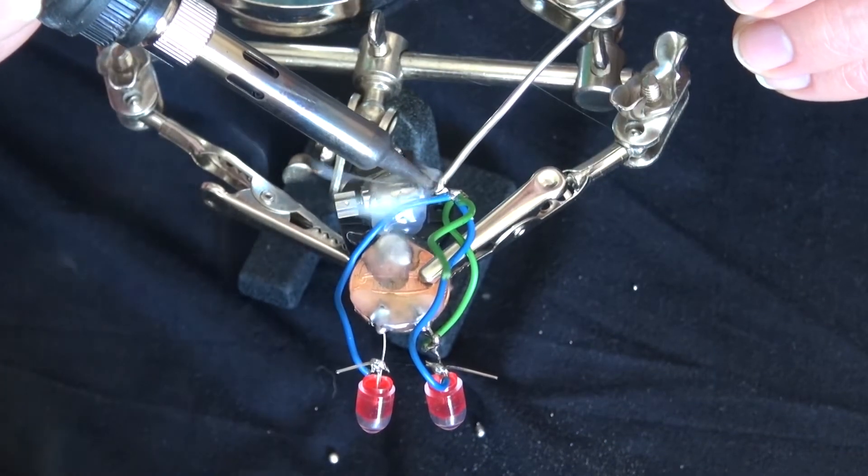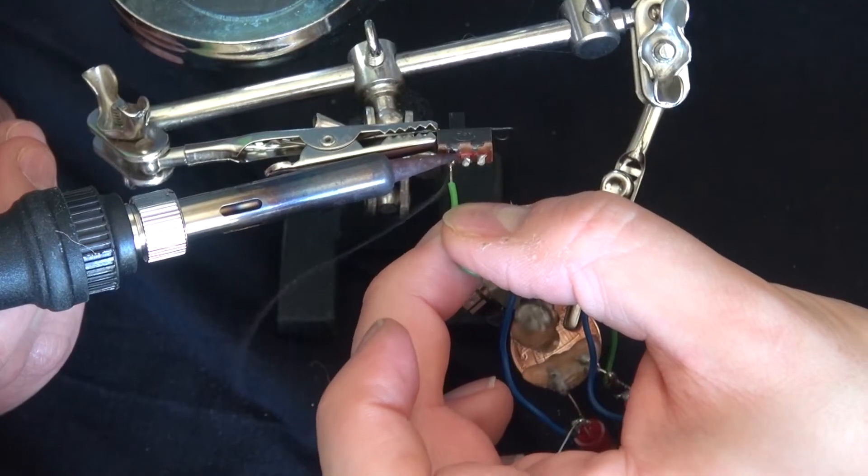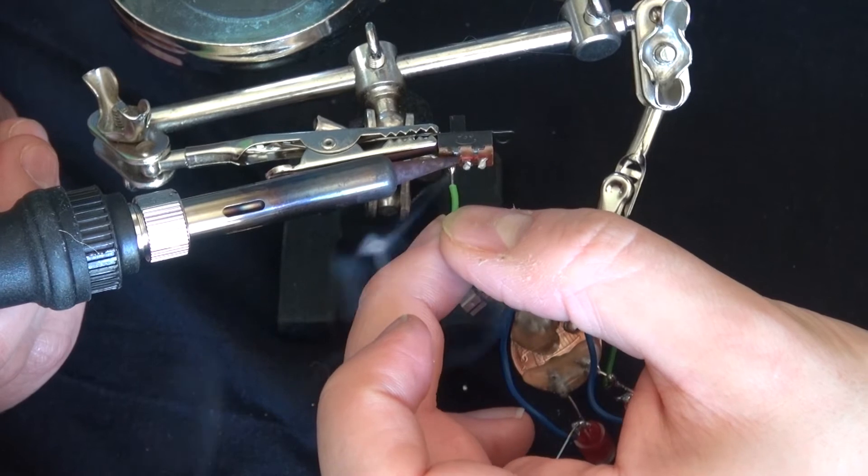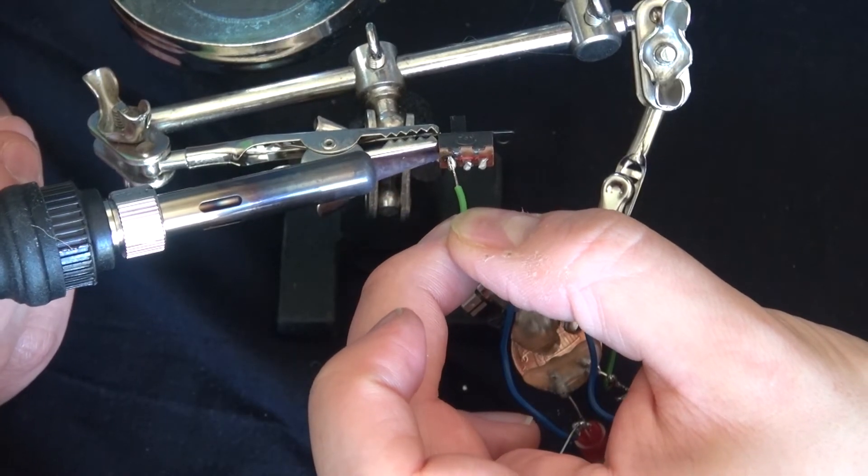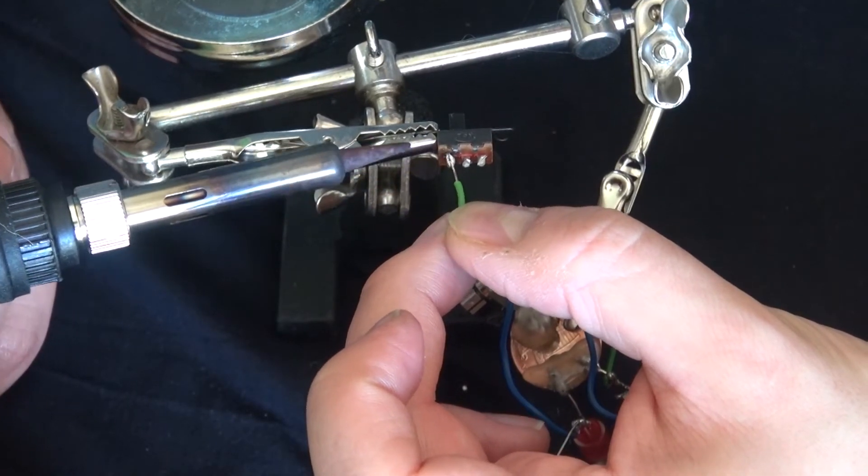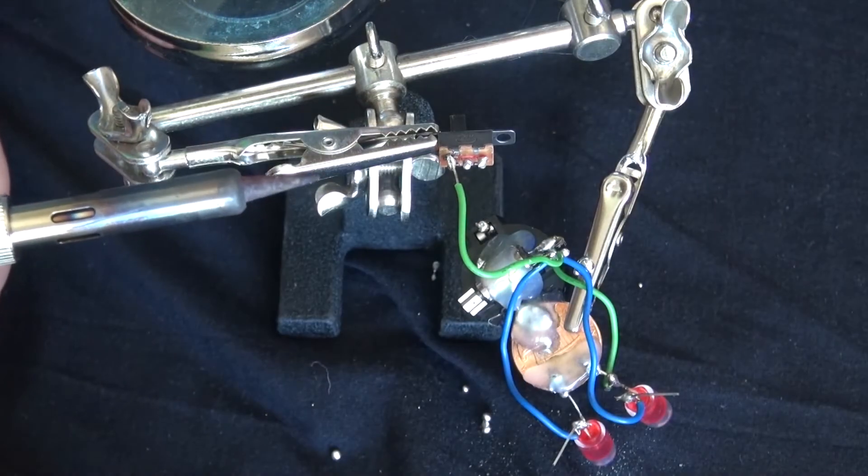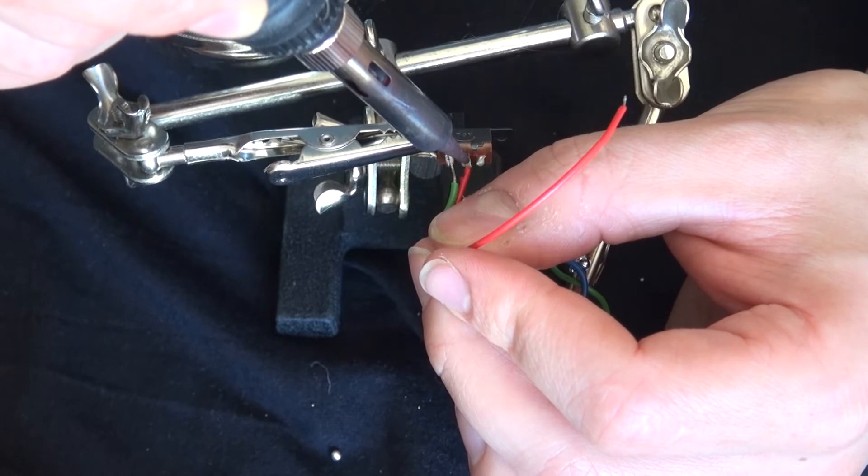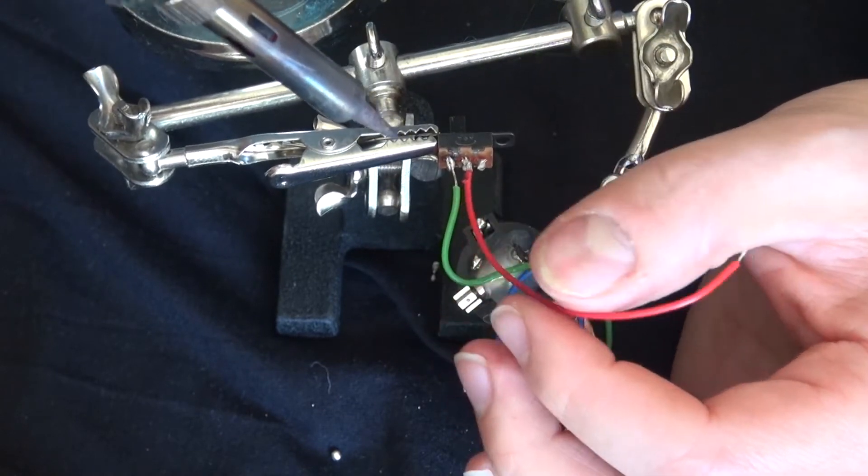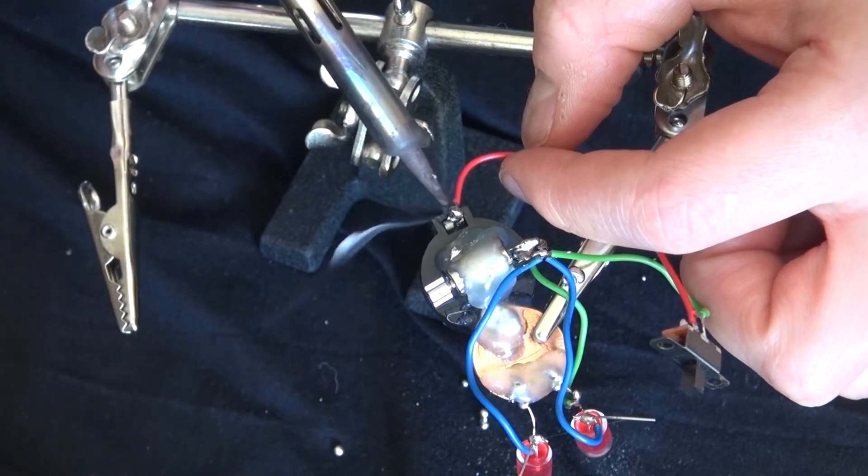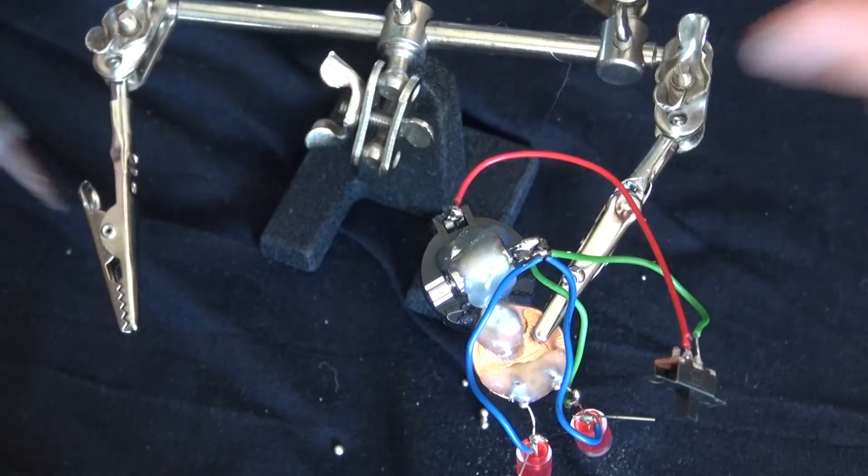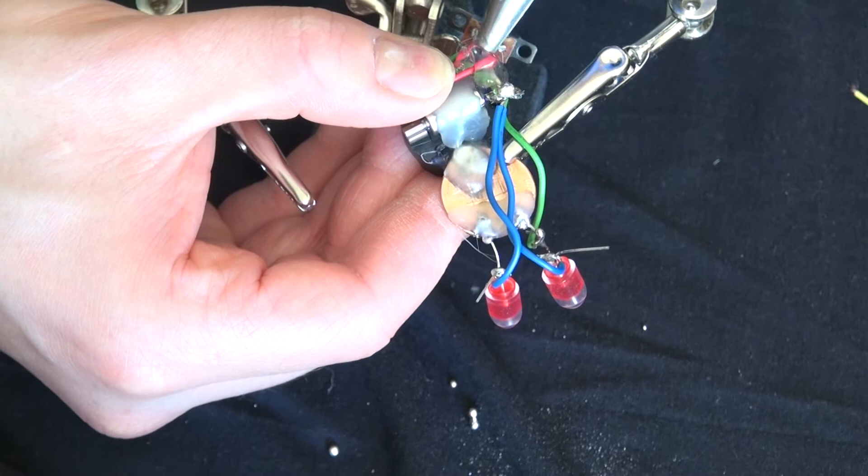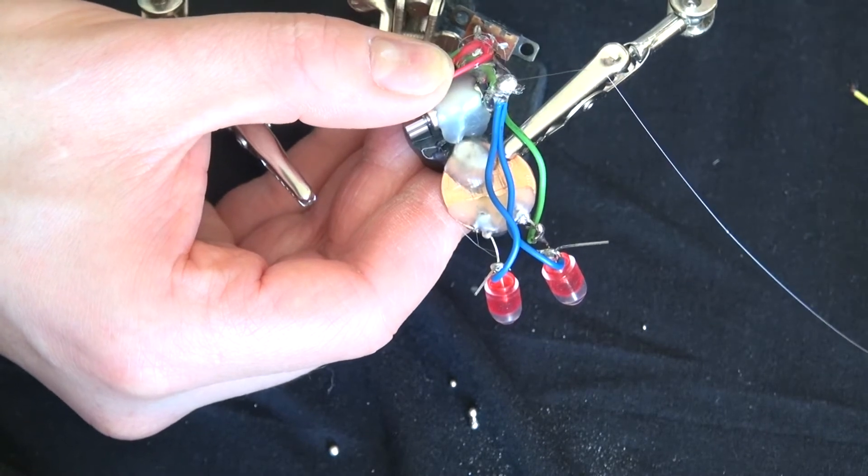There we go. Now it's soldered into place. Now I'm going to solder one wire to the switch. Now I'm soldering another wire to the switch. And then solder it to the positive part of the battery. Glue everything into place.